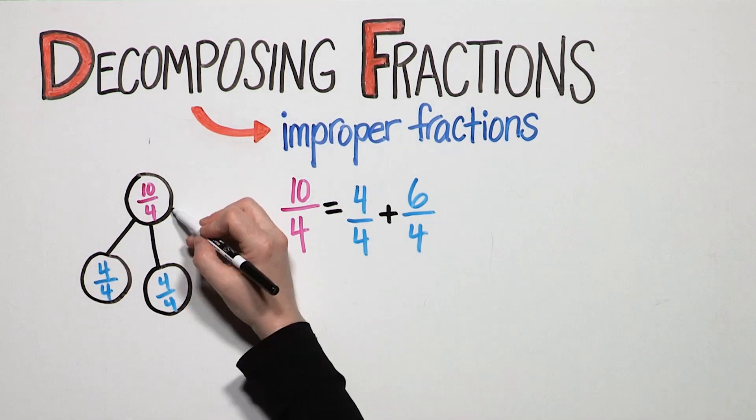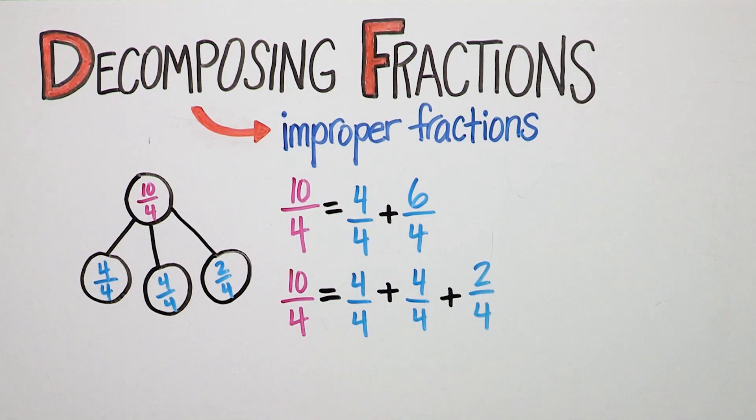But wait! He can pull out another whole. Your child knows one whole equals one. So he can now see ten fourths equals one plus one plus two fourths.